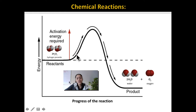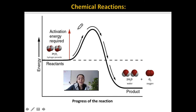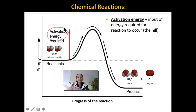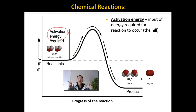We call this hump the activation energy. The activation energy is the input of energy required for a reaction to occur — it's the hill that you see in this image. For every single chemical reaction to happen, there needs to be some input of energy, some level of activation energy that must be overcome.